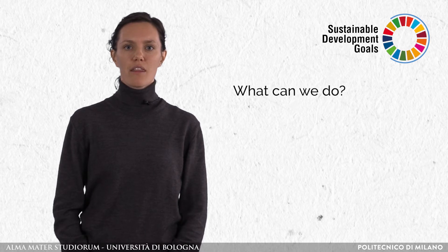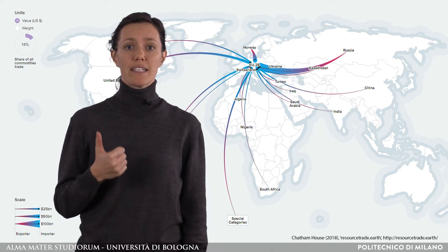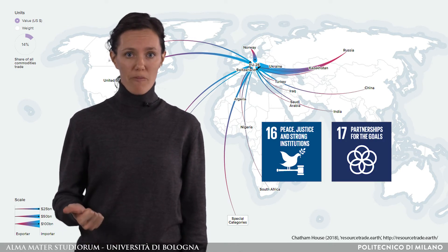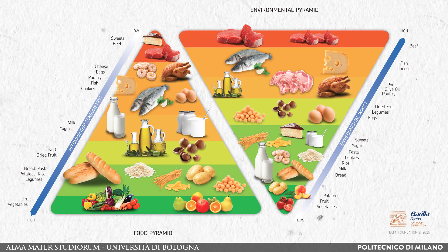But what can we do? Here are three major points. Given the global dimension of the food system and the fact that food-related issues do not have borders, we need cooperation, collaboration and sharing of best practices. Second, the multifaceted nature of food sustainability calls for systemic and multidisciplinary approaches, from research to policy making, and the SDGs provide an effective framework to pursue these approaches. Finally, the participation of all of us in our daily choices is crucial. As shown by the double pyramid published by the Barilla Center for Food and Nutrition Foundation, food that is good for our health is likely to be good also for our environment.